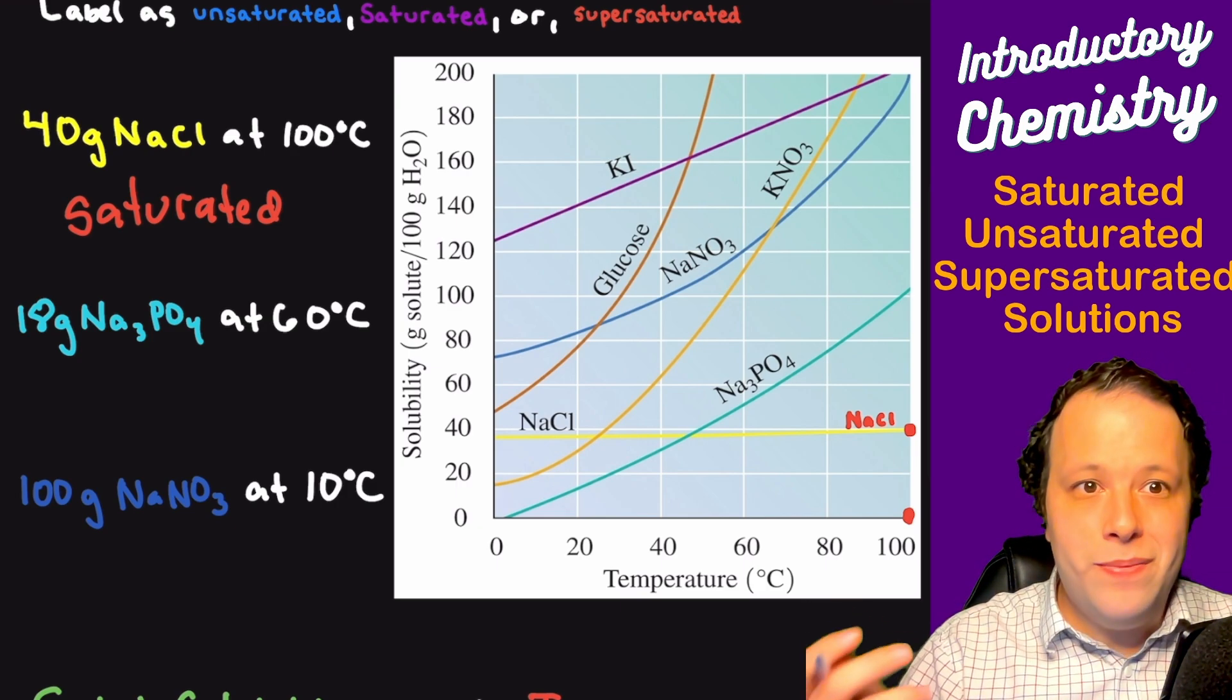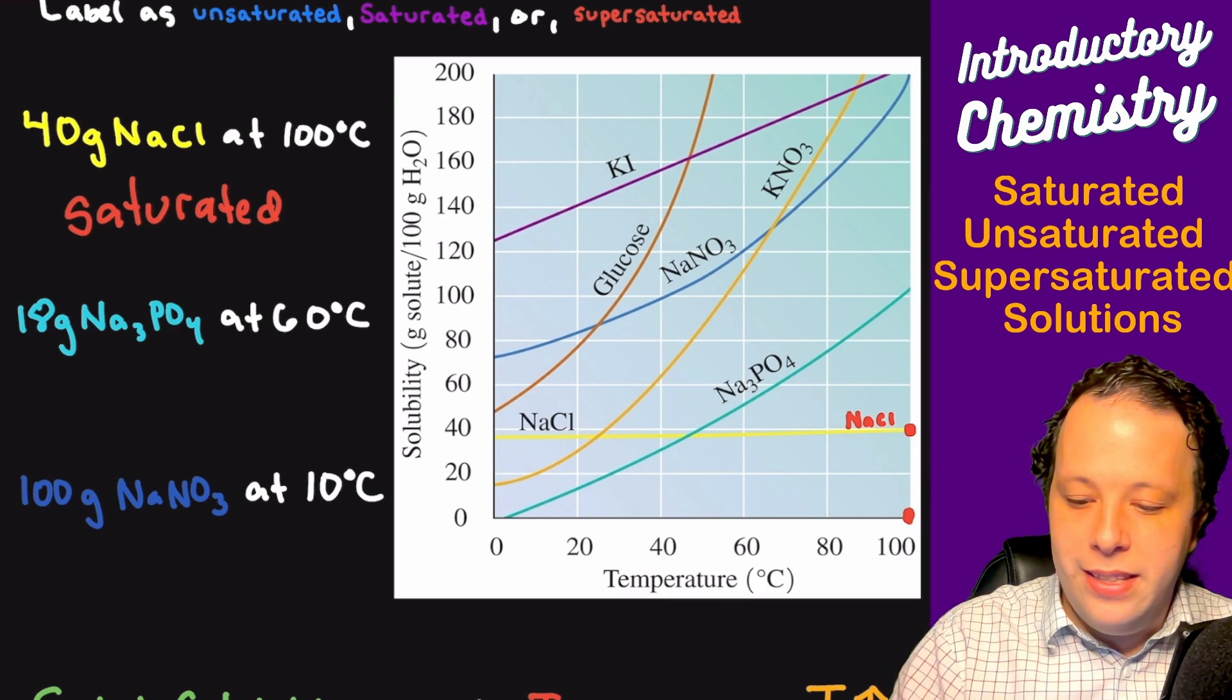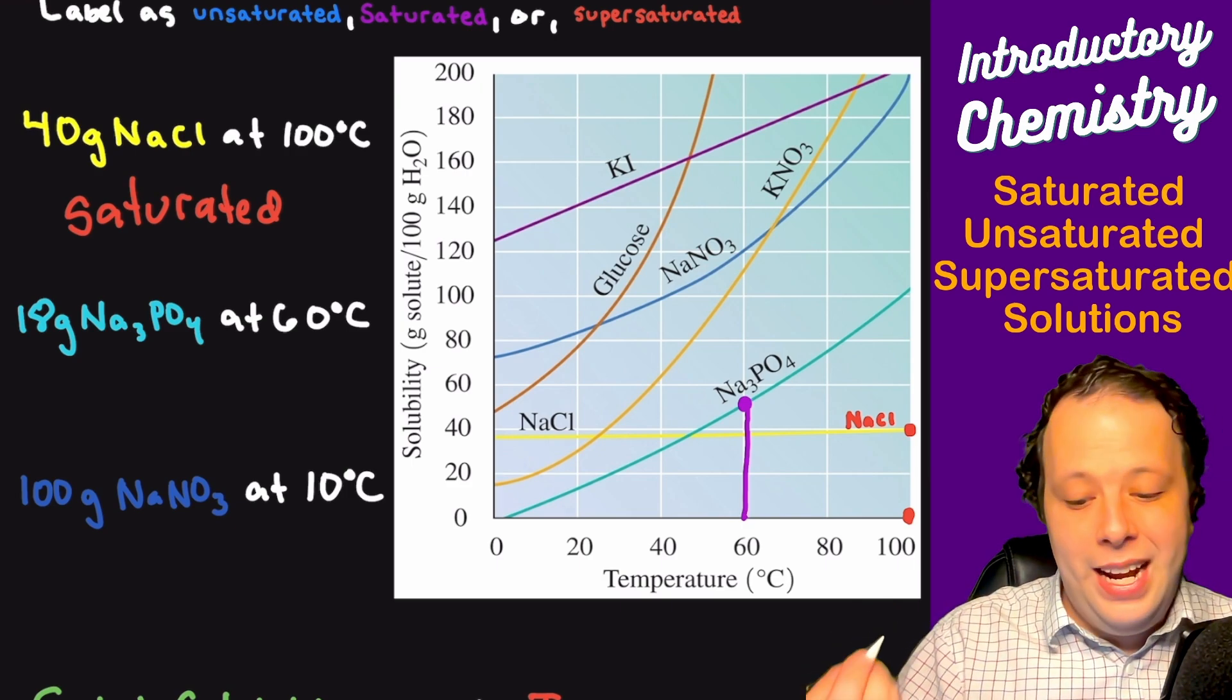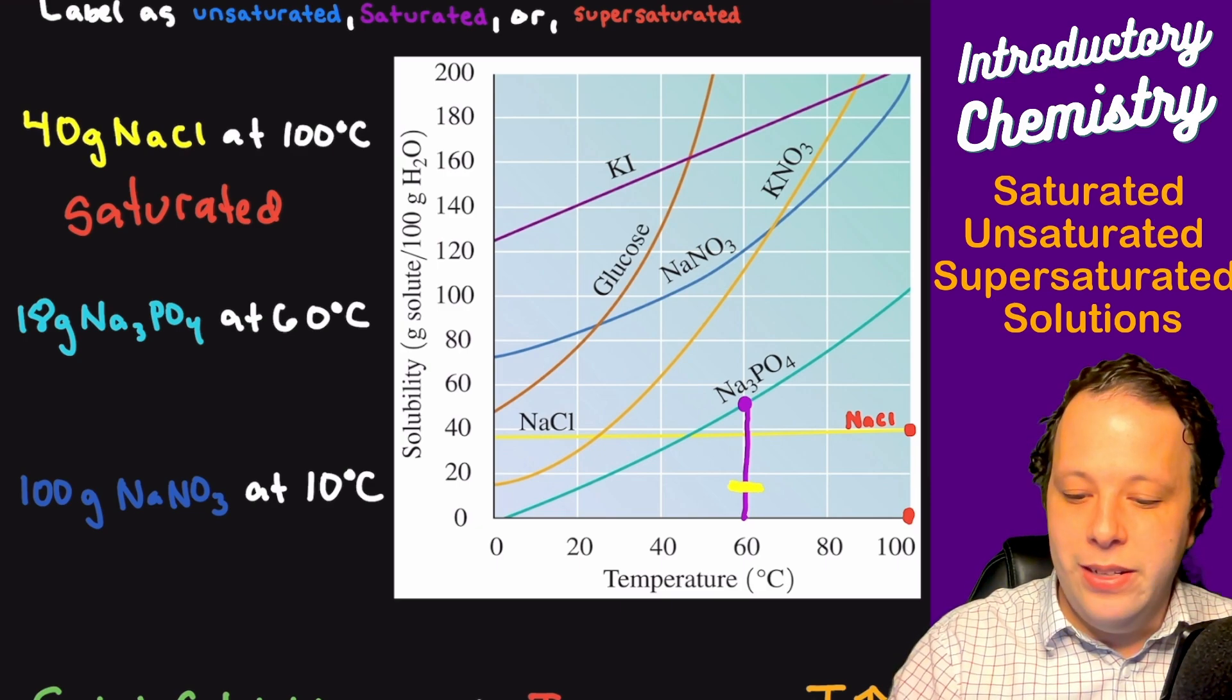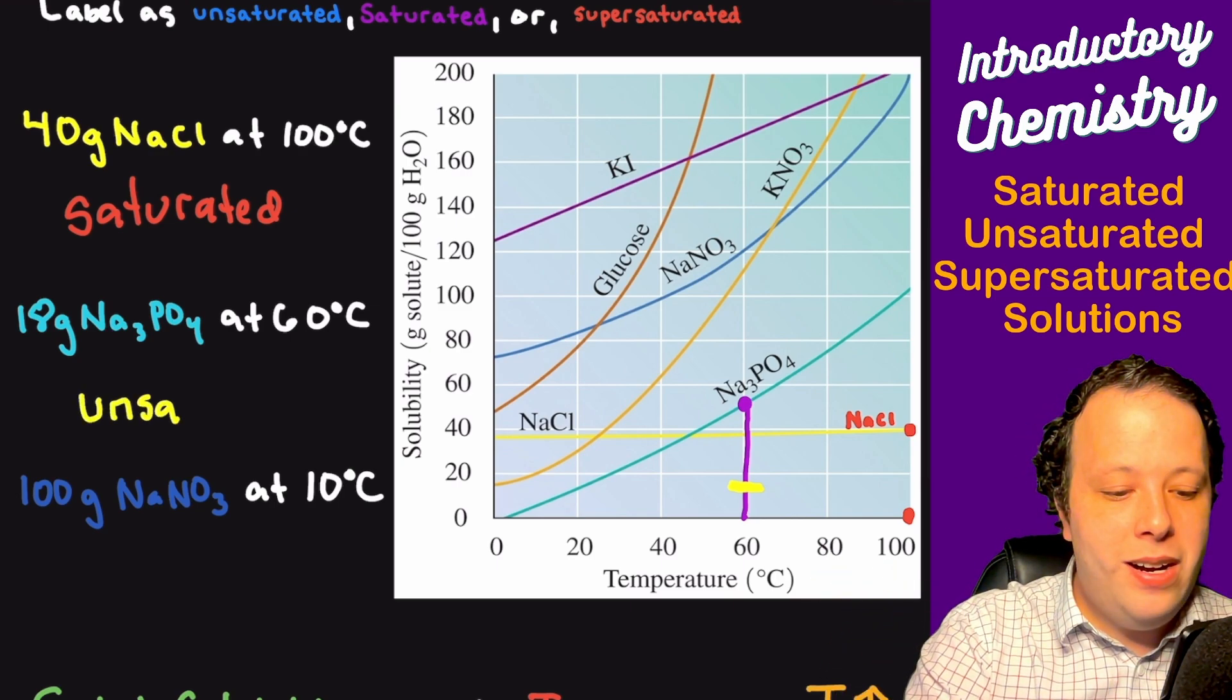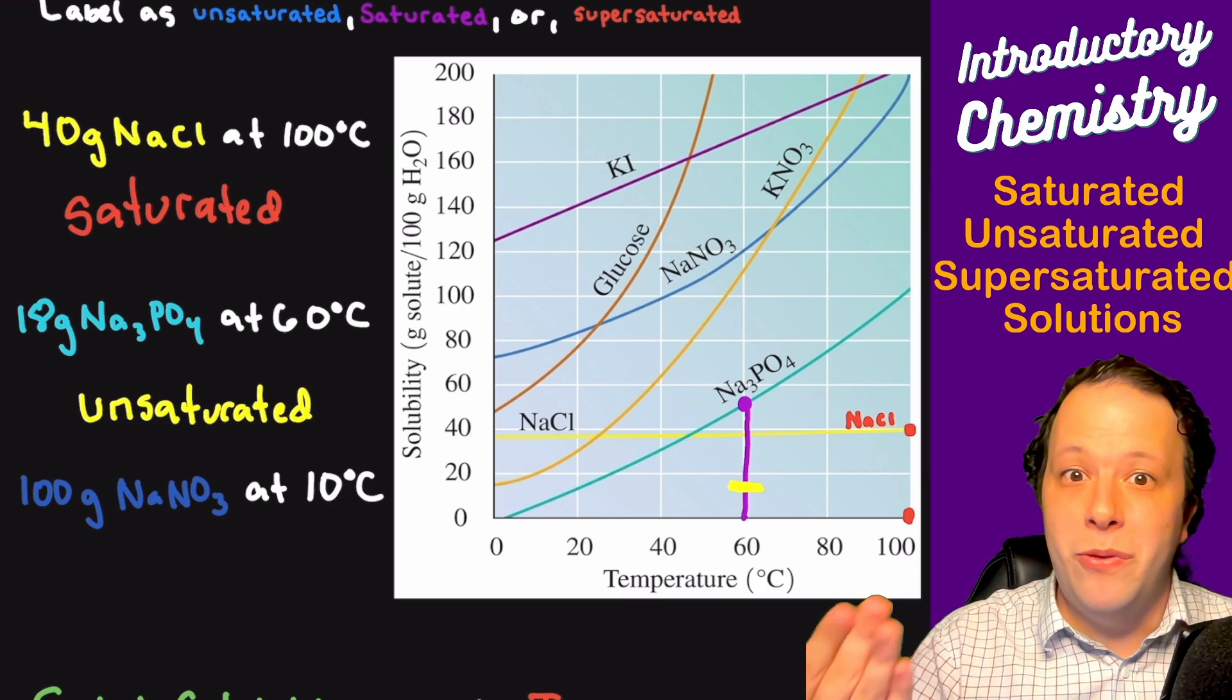Next one says 18 grams of sodium phosphate at 60 degrees C. First we got to find sodium phosphate. That's the line that's right here in blue. So it's 60 degrees. That will go right to about here on the curve. It says 18 grams. 18 grams is right down here on the y-axis. It's well below where we're currently at. What that means is that this is going to be unsaturated. In fact, you can go up to about 50 grams of sodium phosphate before it became saturated.